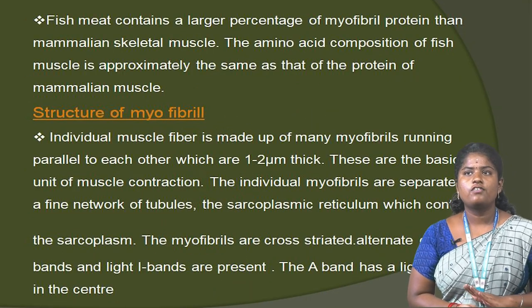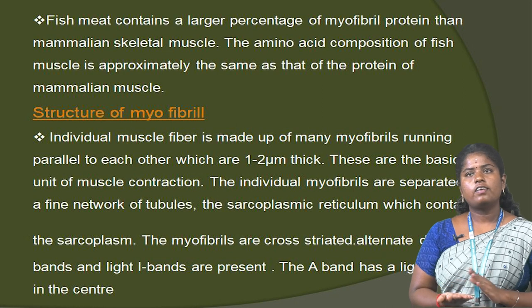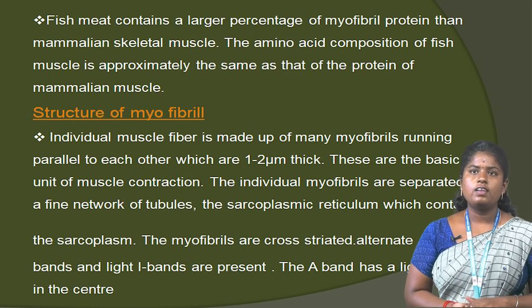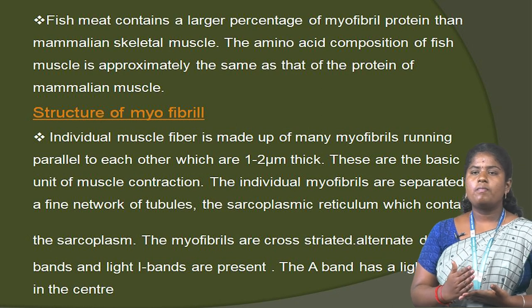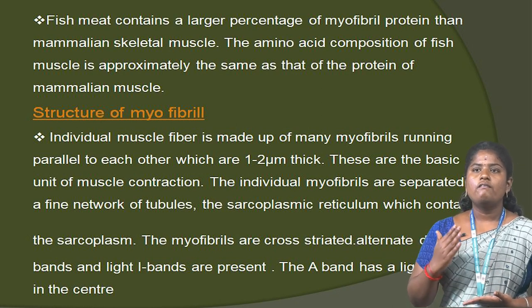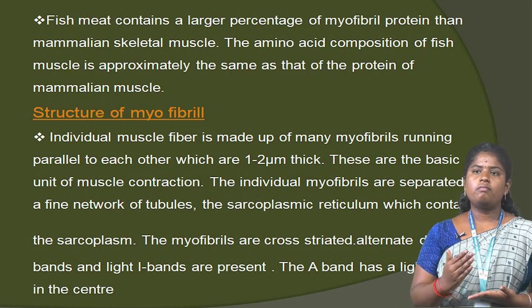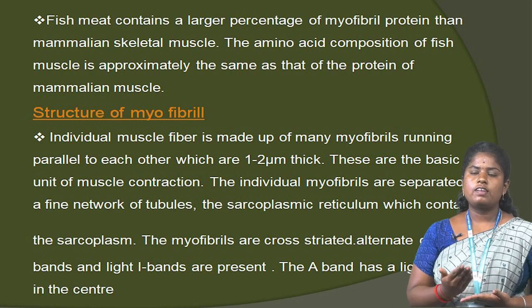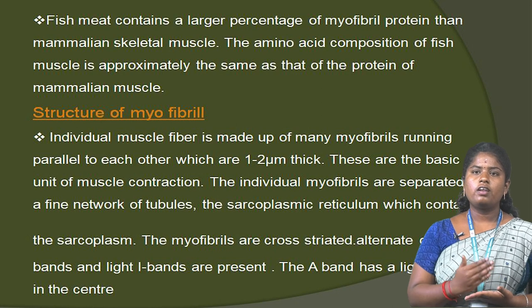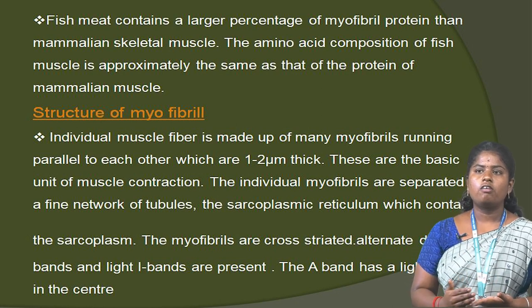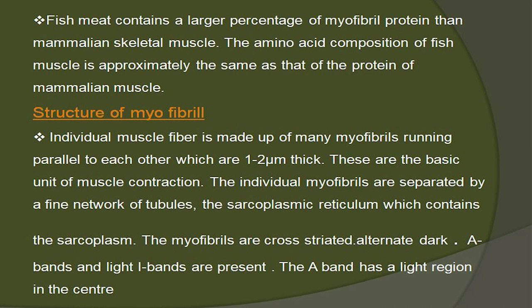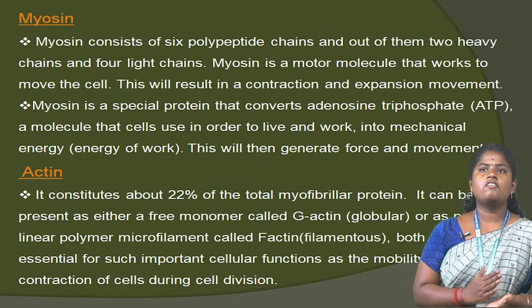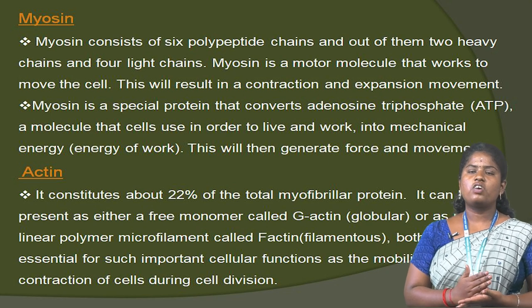Fish meat contains a larger percentage of myofibrillar protein than mammalian skeletal muscle. The amino acid composition of fish muscle is approximately the same as the protein of mammalian muscle. The structure of myofibrillar: individual muscle fibers are made up of many myofibrils running parallel to each other, which are 1 to 2 micrometers thick. These are the basic units of muscle contraction. The individual myofibrils are separated by a fine network of tubules — the sarcoplasmic reticulum — which contains the sarcoplasm. The myofibrils are cross-striated, with alternating dark A-bands and light I-bands present. The A-band has a lighter region in the center. Myosin consists of 6 polypeptide chains: 2 heavy chains and 4 light chains.